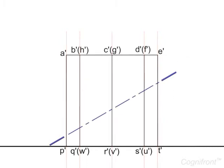The elevation of the cutting plane will be a trace line AA inclined at 30 degrees to XY. It cuts the cylinder at 1' 2' 3' 4' 5' 6' 7' 8'.